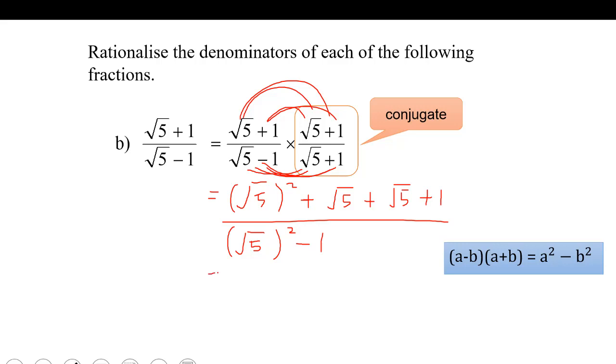So we have 5 plus. This is actually the same thing. So again, 2 plus 2 square root of 5 plus 1. The denominator will be 5 minus 1. So we'll simplify. We'll get 6 plus 2 square root of 5 over 4.